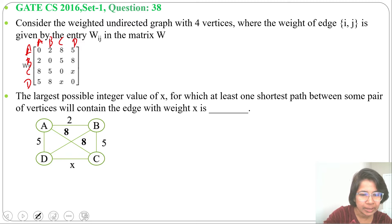So X is the cost of C, D. Now it is asking what can be the largest possible integer value of X.